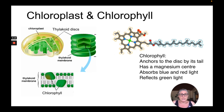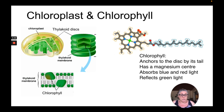Basically, the chlorophyll is embedded into the thylakoid membrane. There are stacks of thylakoid discs inside a chloroplast, and the chloroplast is an organelle inside the plant cells or the photosynthetic organism. That is the basic structure of chlorophyll.